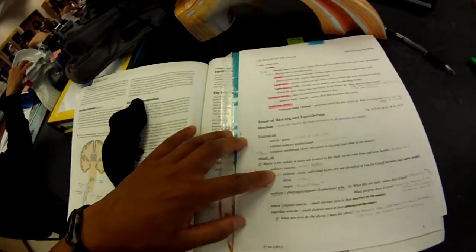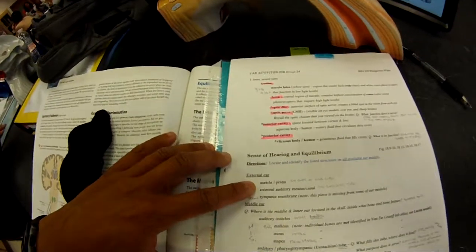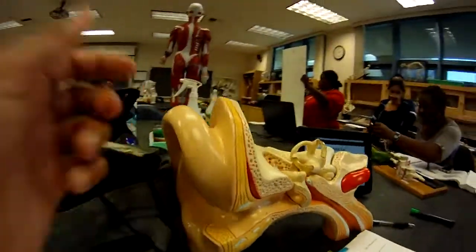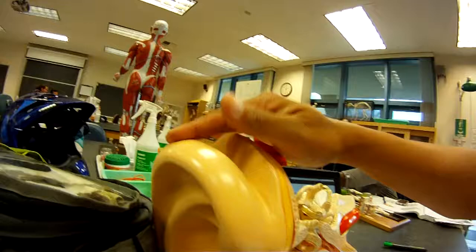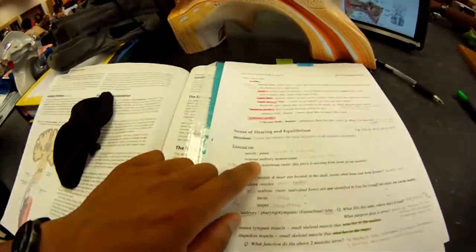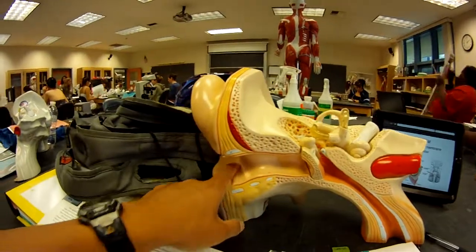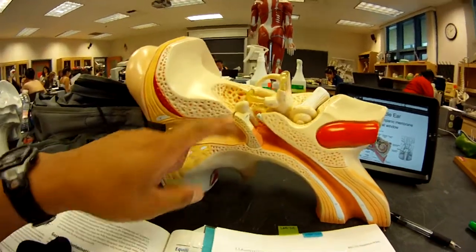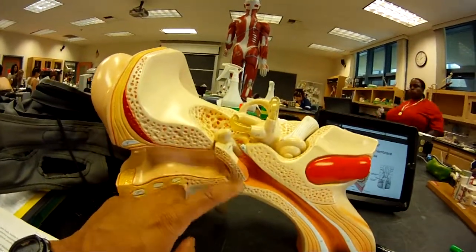Okay, going off the lab, the external ear: the auricle or pinna, top of the earlobe, external auditory meatus canal which is right here, the tympanic membrane which is the eardrum. So this is the external ear.